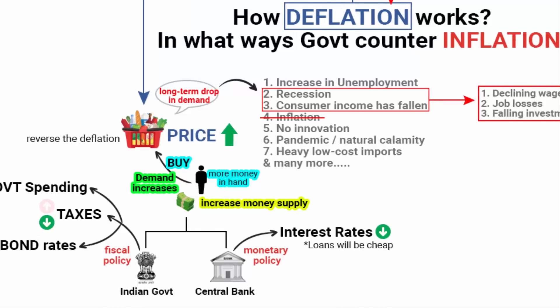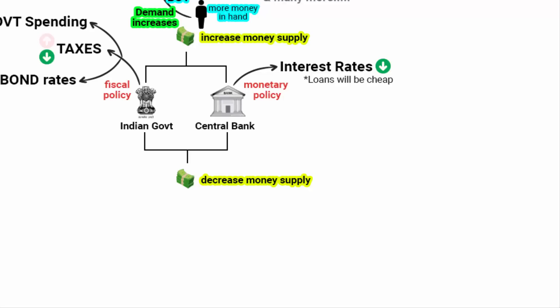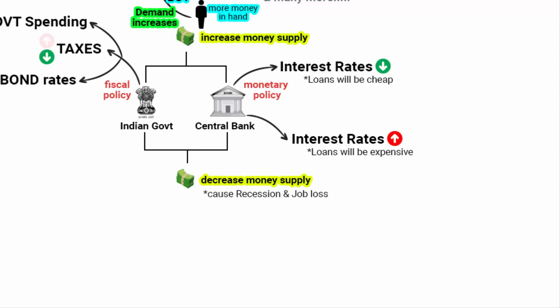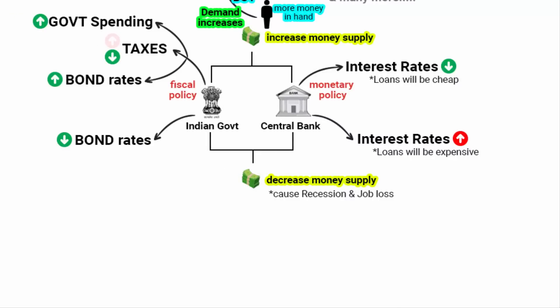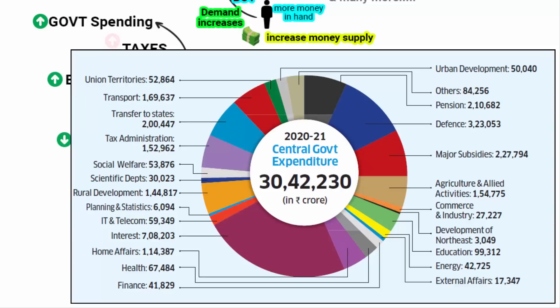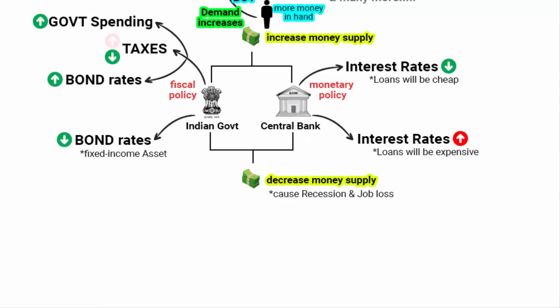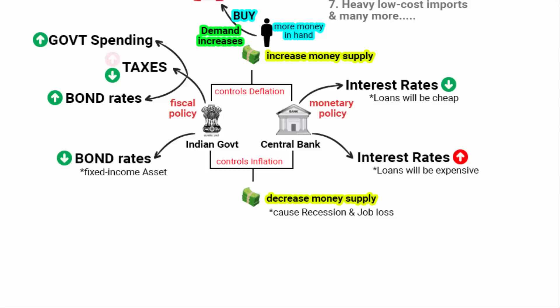On the other hand, to fight inflation, what the government and central bank generally do is reduce the money supply. And how do they reduce the money supply? By increasing the lending interest rate. But keep in mind, if you try to control inflation by reducing the money supply, that may also cause recession and job losses. Also, whenever the central bank increases the lending interest rate, remember: bond prices will go down when interest rates go up. Government bonds are supposed to be the safest investment option, but the return on investment is less. Since it is a fixed income asset, people generally invest in it, and in return the government raises money to support its spending. So generally, the government controls inflation by reducing the money supply, controlled by increasing interest rates and lowering bond rates.